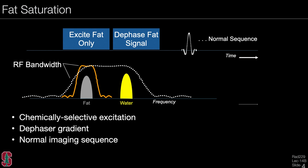To review the previous lecture, we looked at saturation pulses, and the most common example is fat saturation. This technique works by playing a pulse that excites only the fat signal, followed by a dephasor. This ideally removes fat from the image, and then we proceed with our normal imaging sequence. In the frequency domain, we have a frequency-selective pulse around fat shown by the orange pulse, which excites the fat, removes it, and then we play the broader band pulse that would otherwise excite both fat and water.